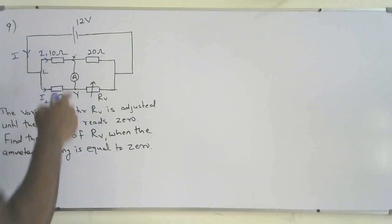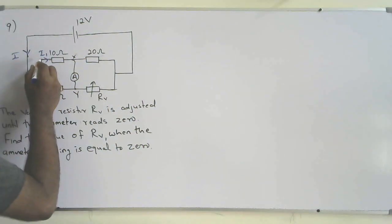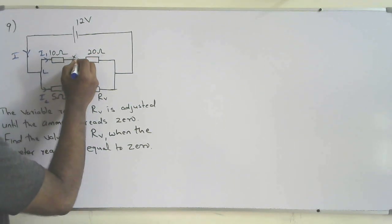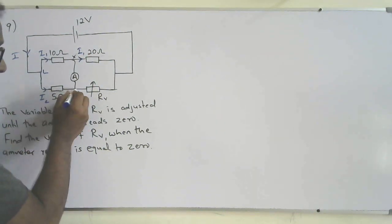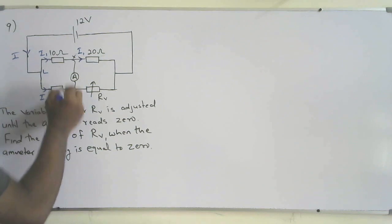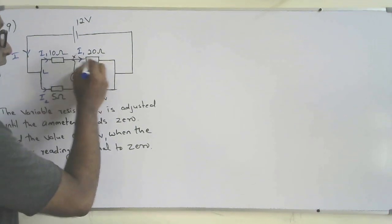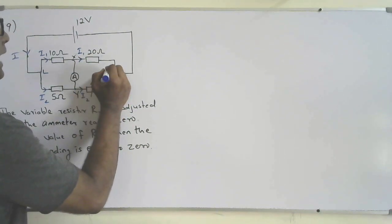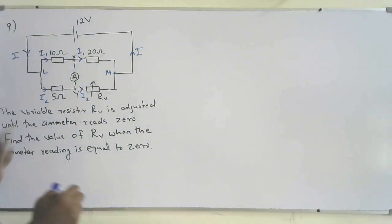Since the ammeter reading is zero, current i1 flows through 20 ohms without splitting. The current through the 20 ohms is also i1. Similarly, i2 is not splitting because no current flows through the ammeter, so the same current i2 flows through Rv. These two currents i1 and i2 rejoin at junction M to form current I.